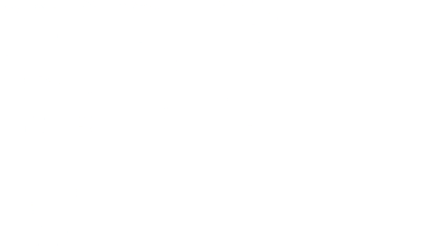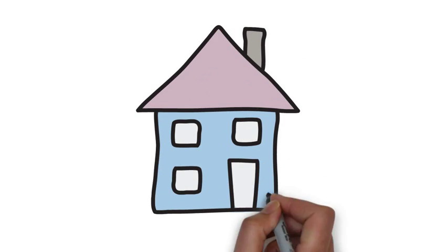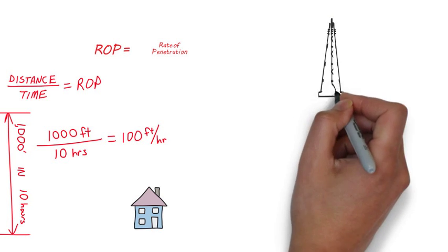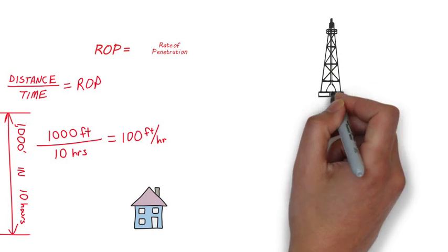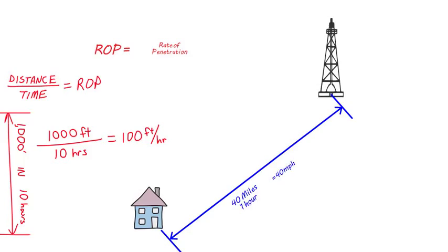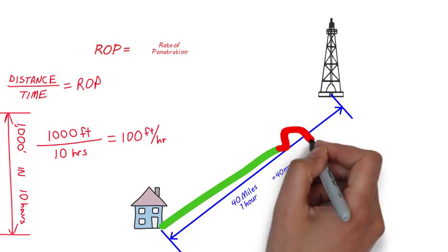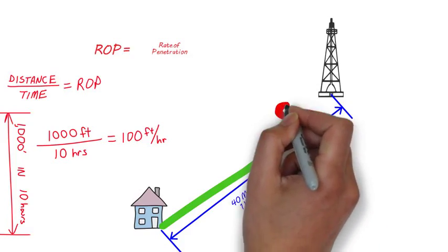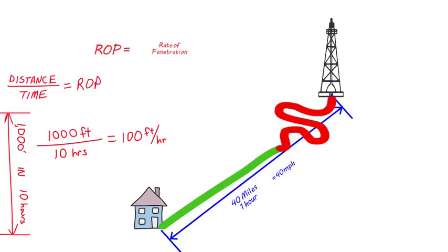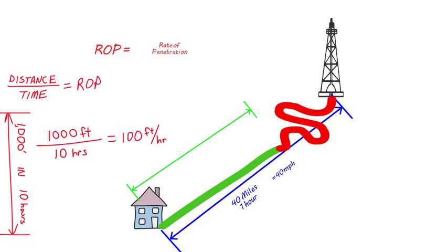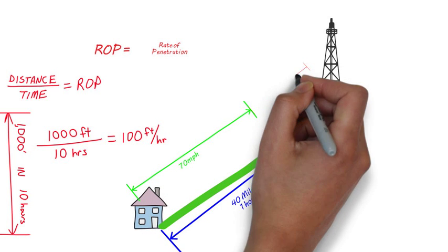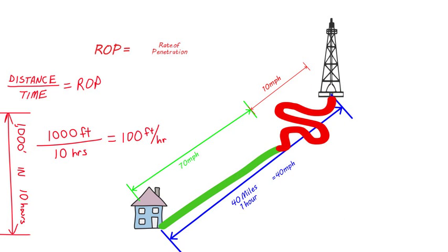But average ROP doesn't tell the whole story. For example, if you leave your house and it takes you 1 hour to drive to a rig about 40 miles away, we could say that you drove at 40 miles per hour. But what if you drove 70 miles per hour most of the way, and 10 miles per hour the rest? 40 miles per hour would be your average speed, but your instantaneous speed would be 70 miles per hour and 10 miles per hour at different parts of the trip.